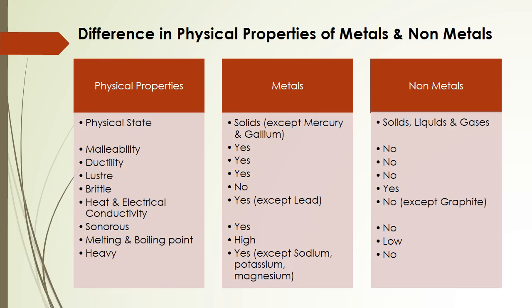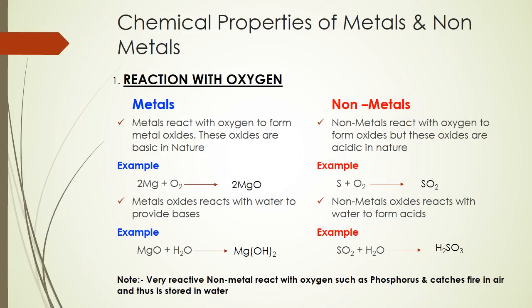Metals are sonorous, nonmetals are not. Metals have high melting and boiling points, nonmetals have low melting and boiling points. Metals are generally heavy in nature — with exceptions like sodium, potassium, and magnesium — while nonmetals are generally light in nature.